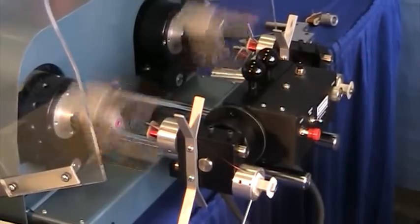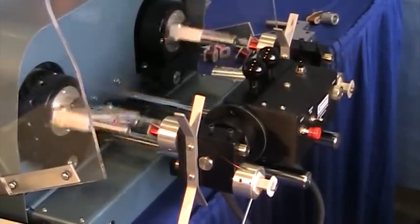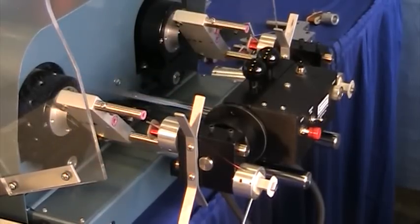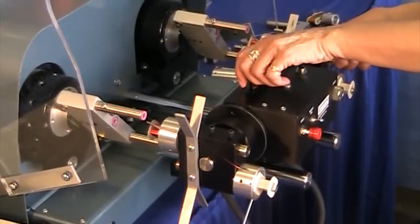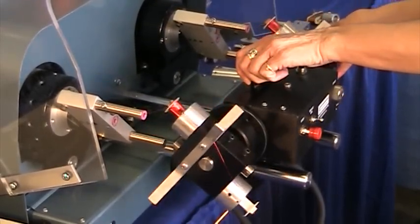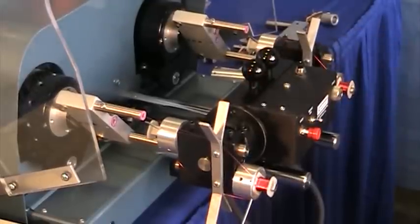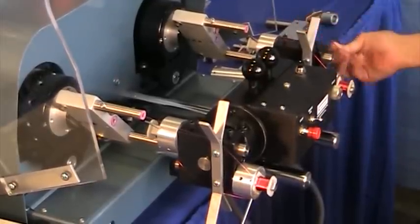The just-wound bobbins are presented to the operator for removal. A set of new bobbins can be mounted to be ready for winding when the current set is finished. The winding heads can stop within a tenth of a rotation to maintain clearance as the turret rotates the tooling with the bobbins.